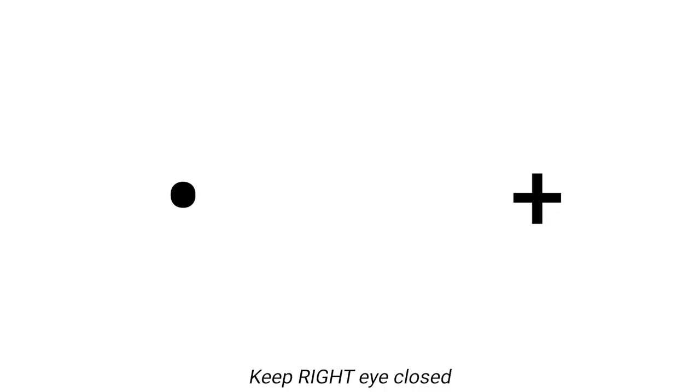Demo time. This is somewhat sensitive to size and distance, so if you're watching on a larger TV it might not work — you can just scribble down a little copy and do it that way. Close your right eye and look at the plus sign with your left eye. As things move around, keep your right eye closed and your left eye focused on the plus sign. At some point, if the sizes are working out correctly, the dot will appear to vanish.